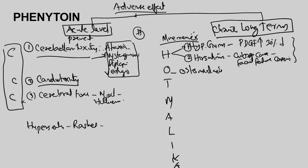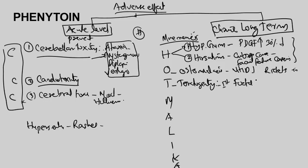Phenytoin interferes with Vitamin D metabolism, affecting bone mineralization and causing rickets in children. T in the mnemonic stands for teratogenicity — phenytoin causes Fetal Hydantoin Syndrome, including cleft lip, cleft palate, hypoplastic phalanges, and microcephaly.